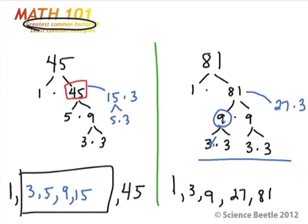So what we do at this point is we look for the numbers in common or the factors in common. So I know that the 1 is common to both. I know that the 3 is common to both, and the 9 is common to both. And that's about it really.